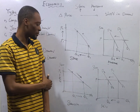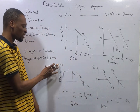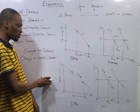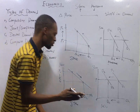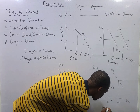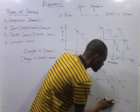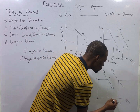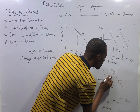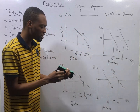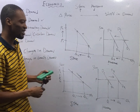For joint demand, if this shows a reduction in the price of stove, what happens? The quantity of kerosene will go up. So instead of coming down, it goes outward — demand shifts from D1 to D2 going forward. If you notice something, the graphs for competitive demand and joint demand are opposite.